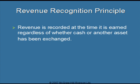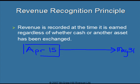One of the most important principles we use when we record transactions is the revenue recognition principle. This states that revenue has to be recorded at the time it is earned, regardless of when we collect the money for that service or good. For example, if we sold something on April 15th and collected the money on May 31st, we use April 15th — when the service was performed — as the date to record the transaction, not May 31st when we actually collect the money.